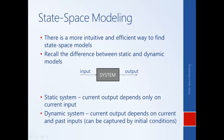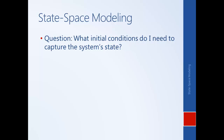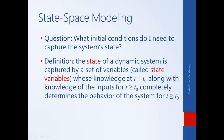The state captures all of those past inputs. The question is: what initial conditions do I need to capture the system state? What set of variables will capture all of the history that came before this instant? The state of a dynamic system is captured by a set of variables, and if we know their values we know the state of the system. If we know the state at a current instant of time, then knowledge of future inputs will completely allow us to determine the behavior of the system.